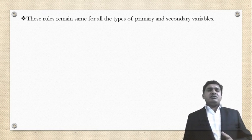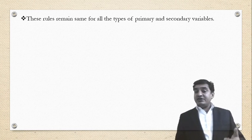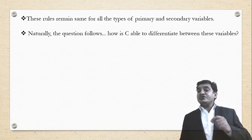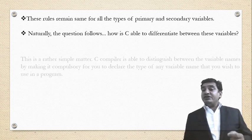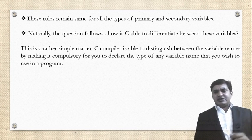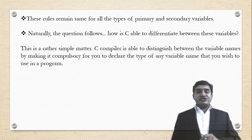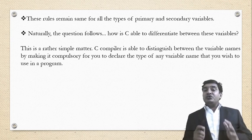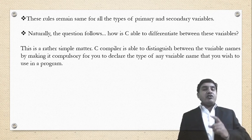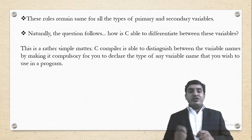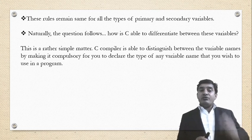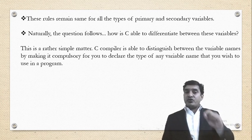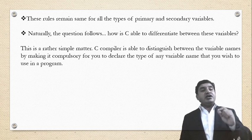This rule remains the same for all types of primary and secondary variables. Naturally, the question follows: how is C able to differentiate between these variables? This is a rather simple matter. The C compiler is able to distinguish between variable names by making it compulsory for you to declare the type of any variable name that you wish to use in the program.